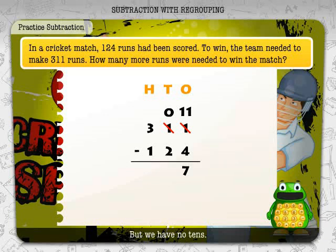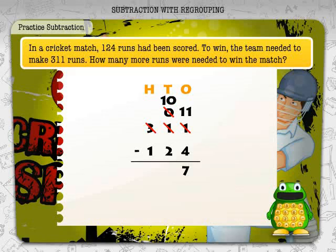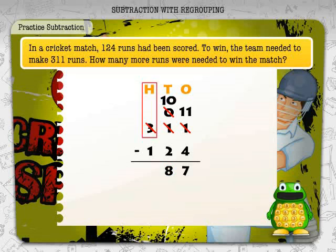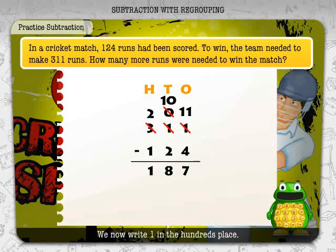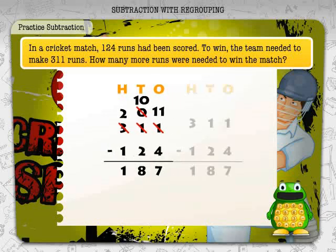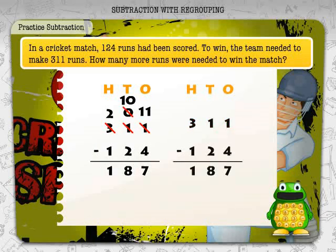Let's borrow one hundred as ten tens. Ten tens minus two tens is equal to eight tens, so we write eight in the tens place. As one hundred has been borrowed, we strike the three in the hundreds place and write two above it. Lastly we subtract hundreds: two hundreds minus one hundred is equal to one hundred. We write one in the hundreds place. 311 minus 124 is equal to 187.